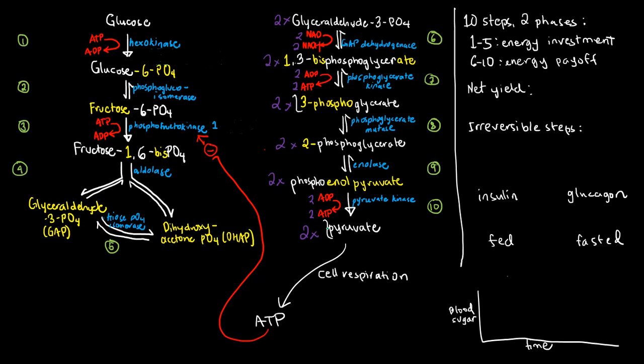Right, what else do we need to know about glycolysis? Many references actually group the 10 steps into two phases. That is, like in this case, you can think of the left side here as the first phase and then the right side here as the second phase. So, many references call the first five steps as an energy investment phase.